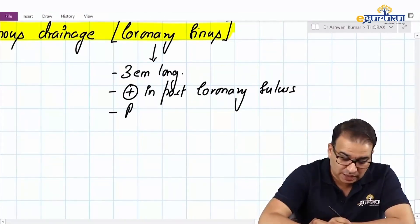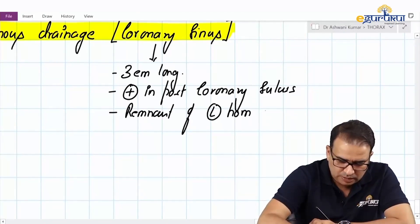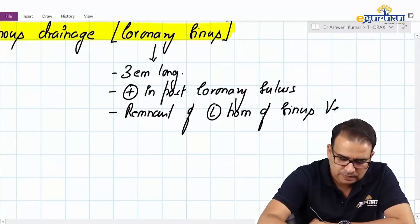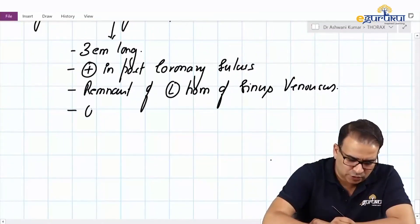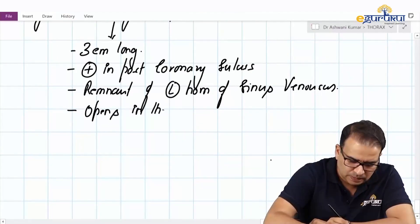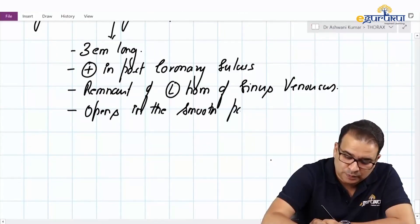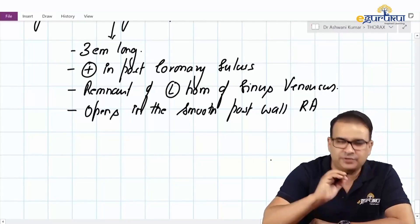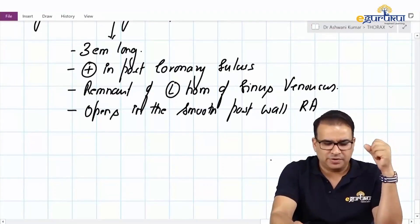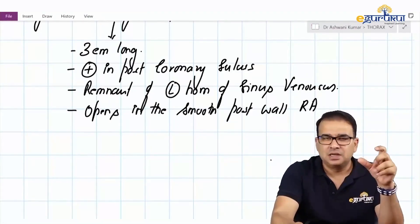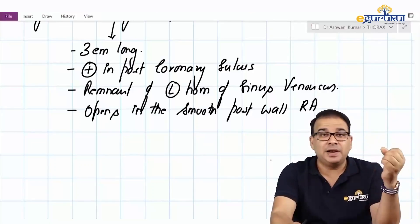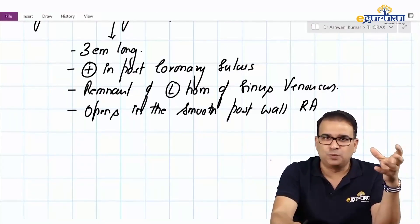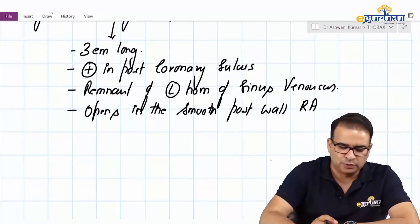Developmentally, the coronary sinus is the remnant of the left horn of the sinus venosus. It opens into the smooth posterior wall of the right atrium. So, to summarize the introductory points: it's a venous sinus about three centimeters long, present on the posterior side in the atrioventricular groove, it's a remnant of the left horn of the sinus venosus, and it opens into the smooth posterior wall of the right atrium.